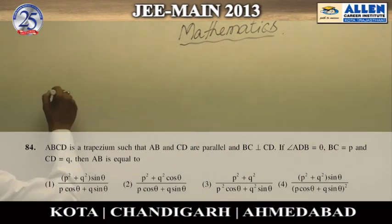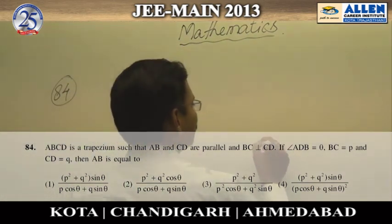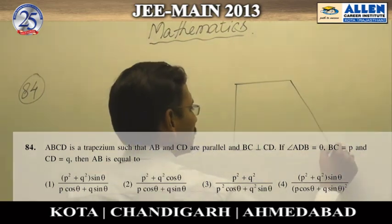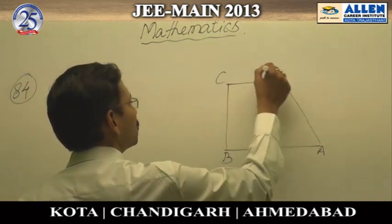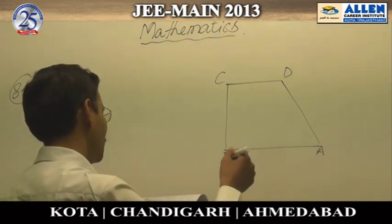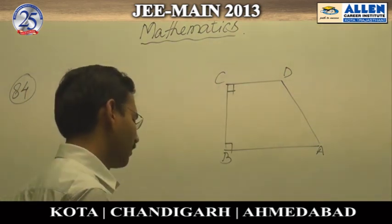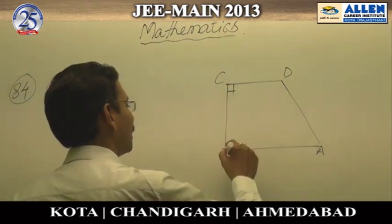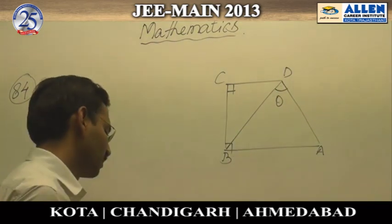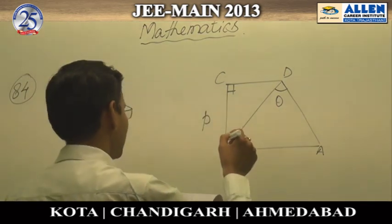In question number 84, ABCD is a trapezium with vertices A, B, C, D. AB and CD are parallel, and BC is perpendicular to CD. Both angles at B and C are 90 degrees. Angle ADB is given as theta. Side BC is small p and side CD is small q.